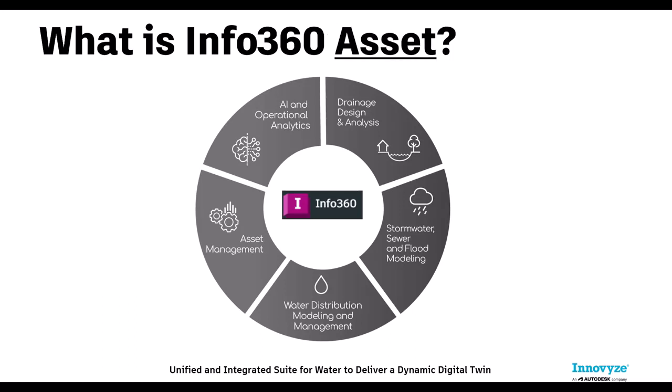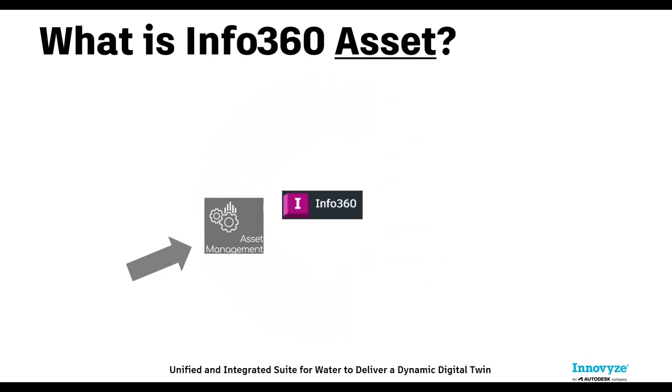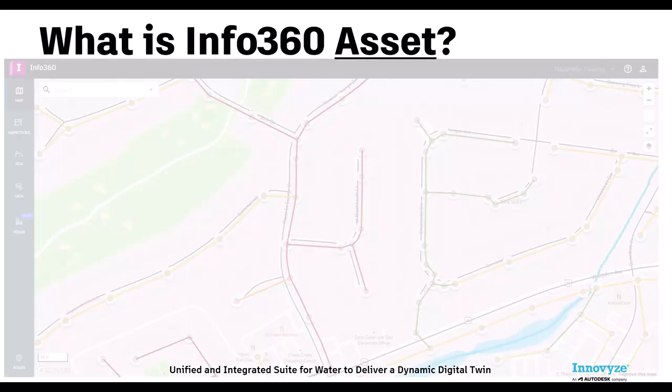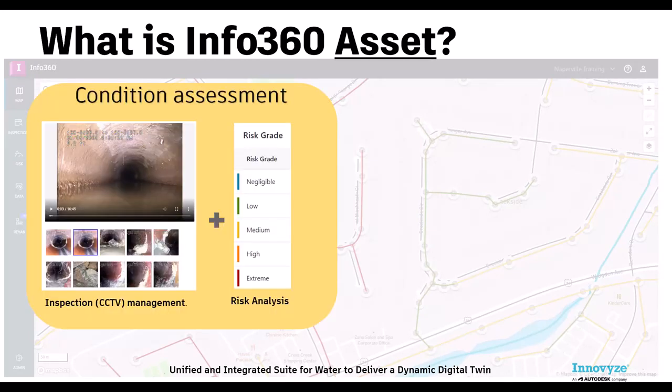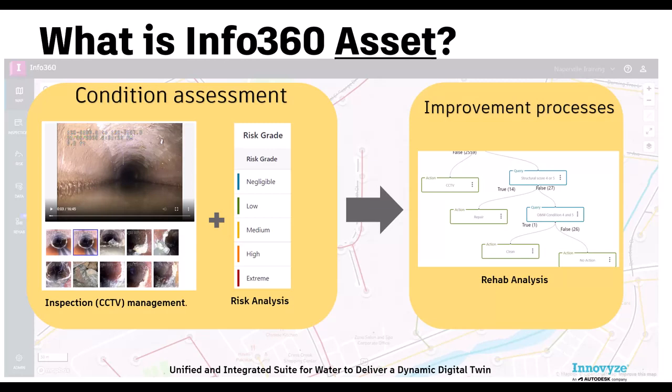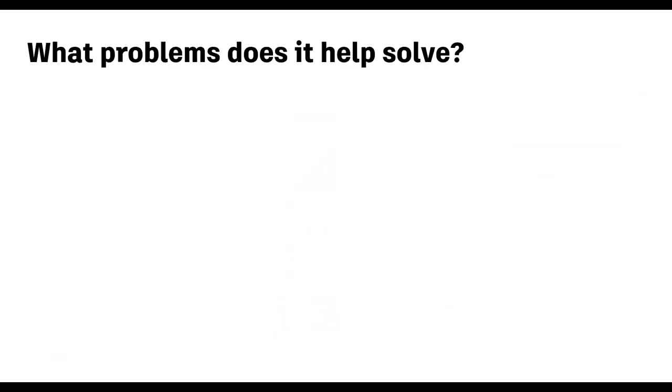Info360 Asset is the asset management tool within the Info360 cloud platform. It is designed to help cities monitor the condition and performance of their systems through its inspection management and risk analysis capabilities, and helps them develop improvement processes with the use of the rehab planning functionality. But what problems does it help solve?